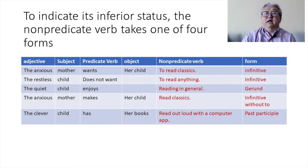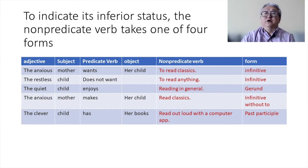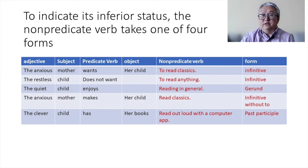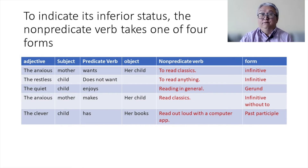The restless child doesn't want to read anything. Again, why 'to read'? Because 'want' says so. So the first form the next verb takes is infinitive. And the quiet child enjoys reading in general — 'enjoys reading.' Why do you say 'reading' instead of 'to read'? Because your predicate verb says 'enjoy,' and 'enjoy' says the next verb has to use the -ing form. No argument about that. So that's the second type of non-predicate verb.